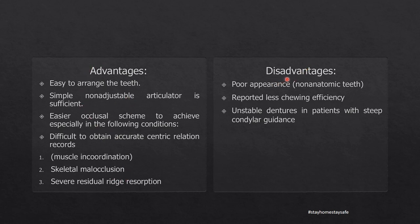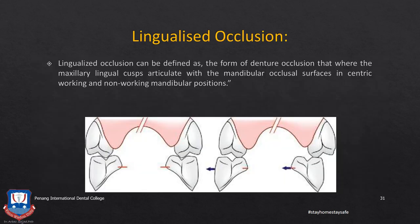Disadvantages of the monoplane occlusal scheme: it is less aesthetic because of the flat occlusal surfaces with no cuspal inclines; there is less chewing efficiency because no sharp cusps can shear food, requiring more effort to grind or mash food; and in patients with steep condylar guidance, or when occlusion is very close to the condylar guidance as in Class II relationships, it is difficult to achieve a stable denture.